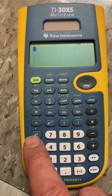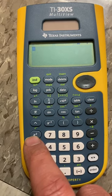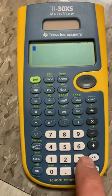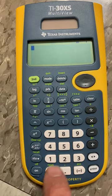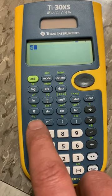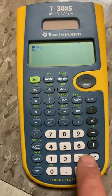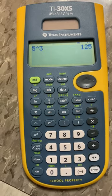We have this carat button. We have a square button, which, you know, is how to square stuff. But if I want to take something to the third power, the fifth power, I can use this carat button. So, for example, 5 to the third power gives me 125.